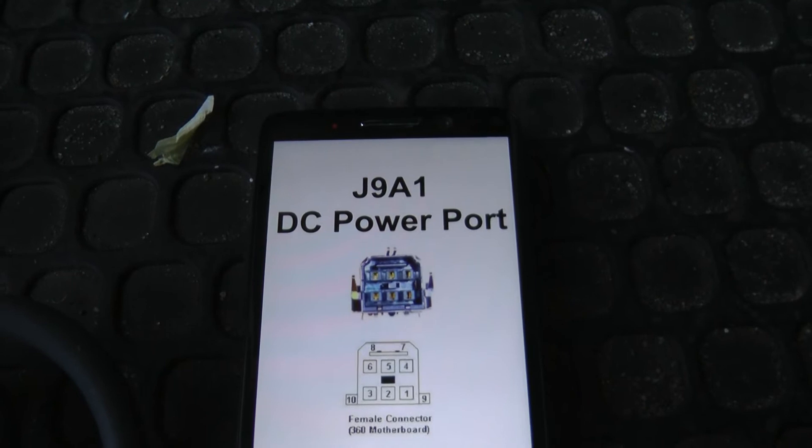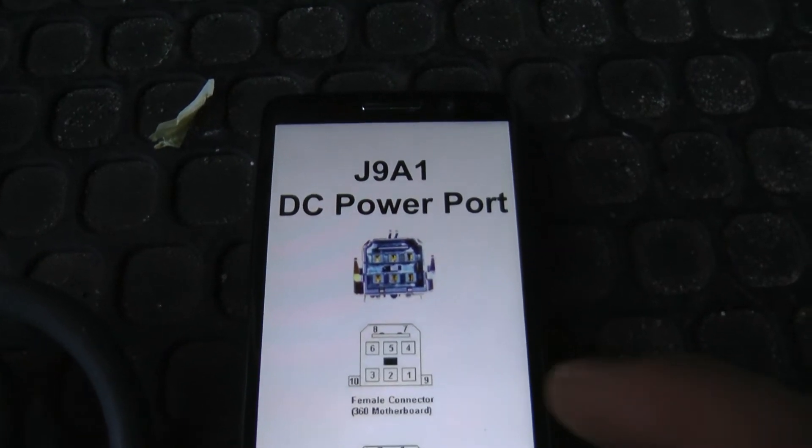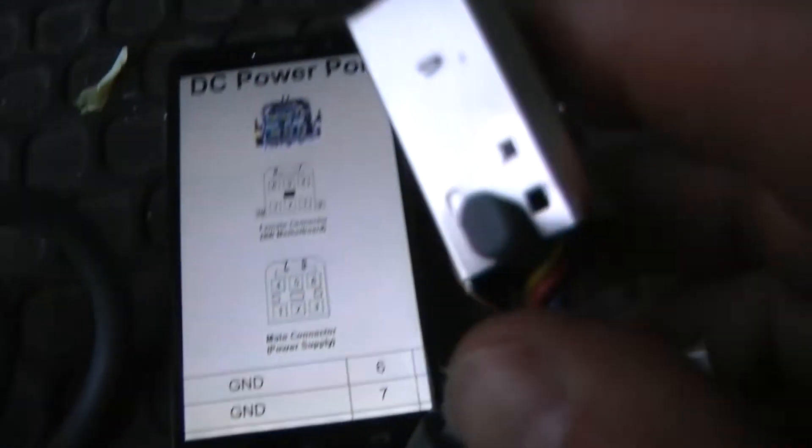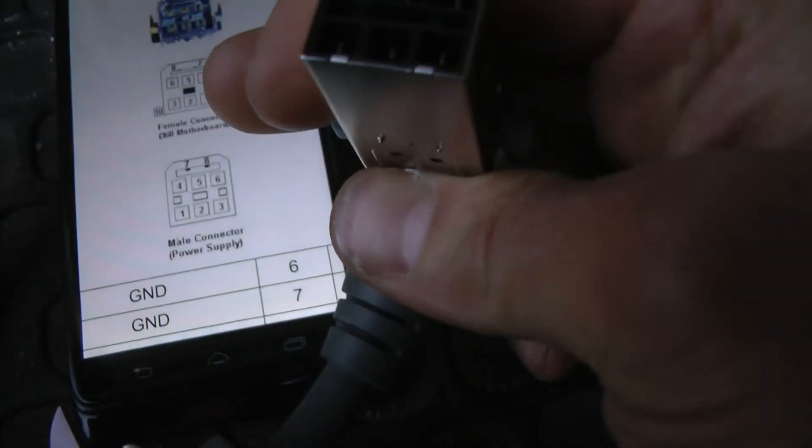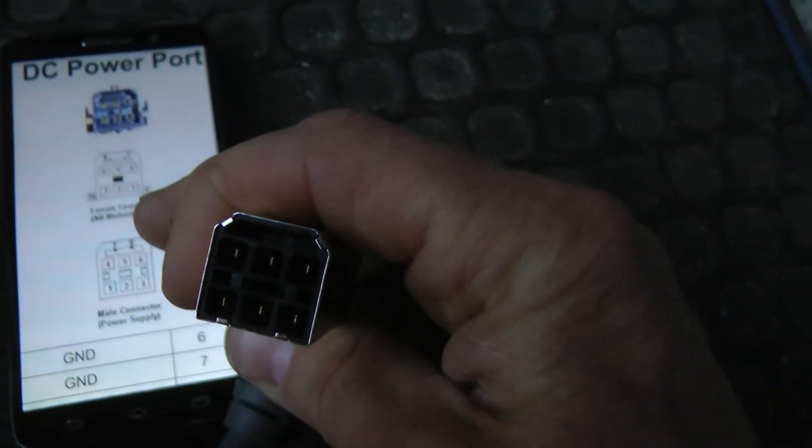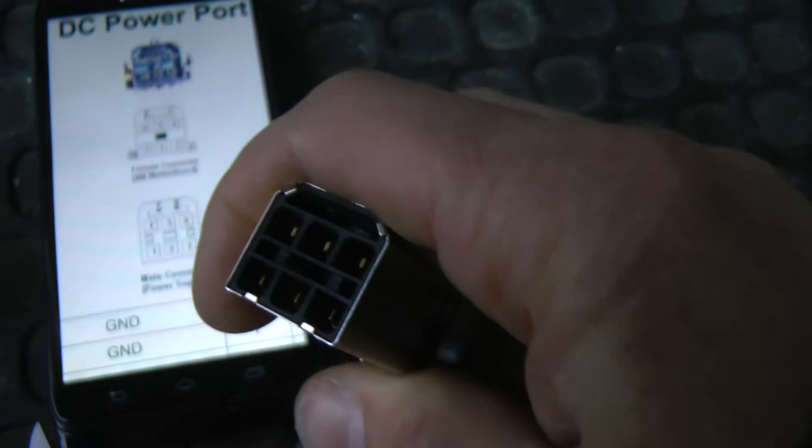This apparently is called a J9A1 DC power port. You can see it has eight, nine, ten - I don't know if it really has ten. No, that's on the female, so it has eight on the male.